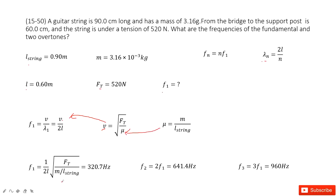Then we get the function for f1. Input all the known quantities, we get the answer. f2 is just 2 times f1, and f3 is just 3 times f1. Thank you.